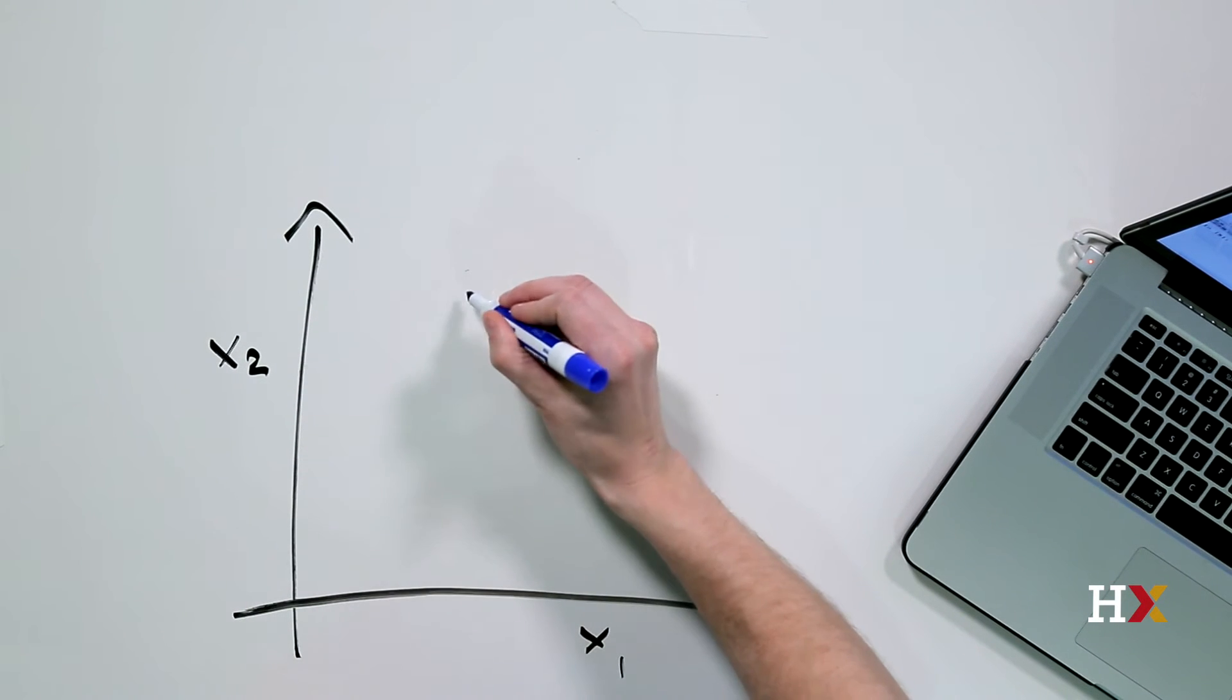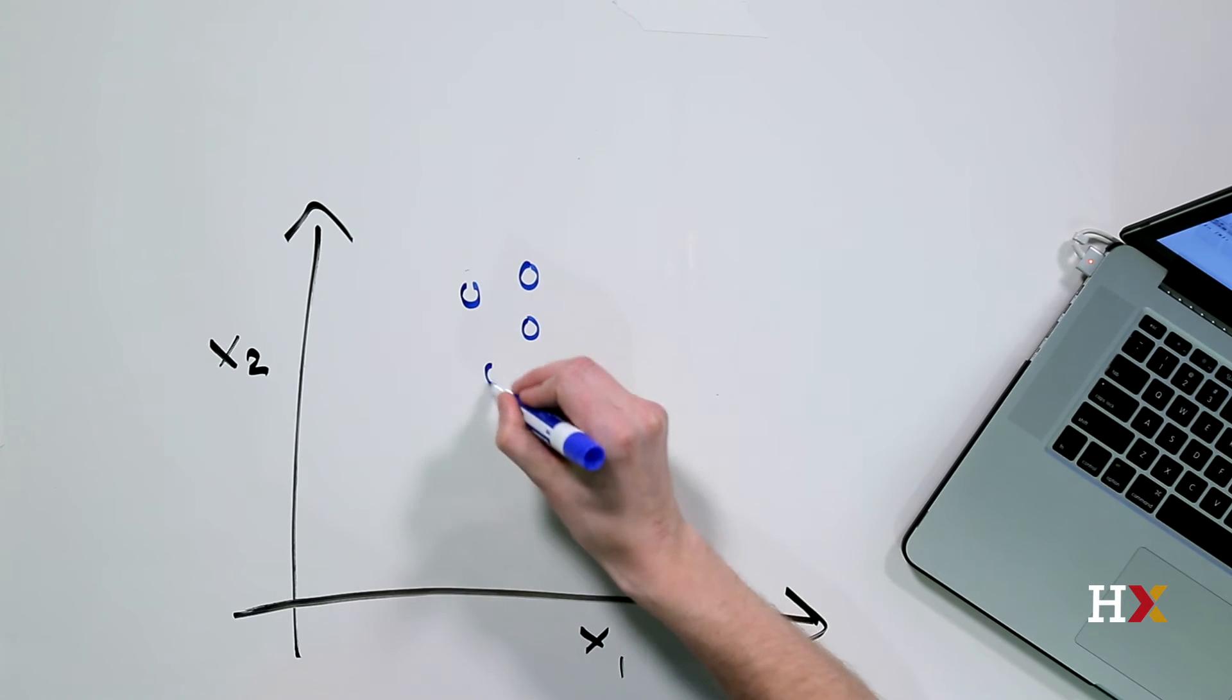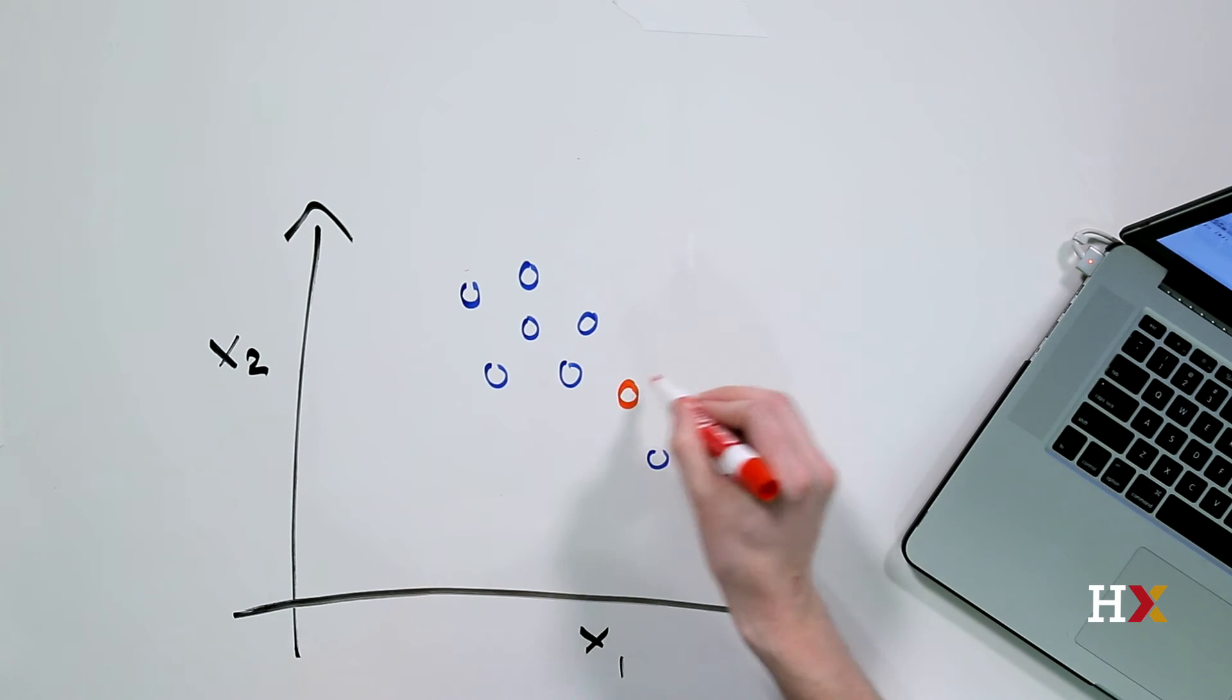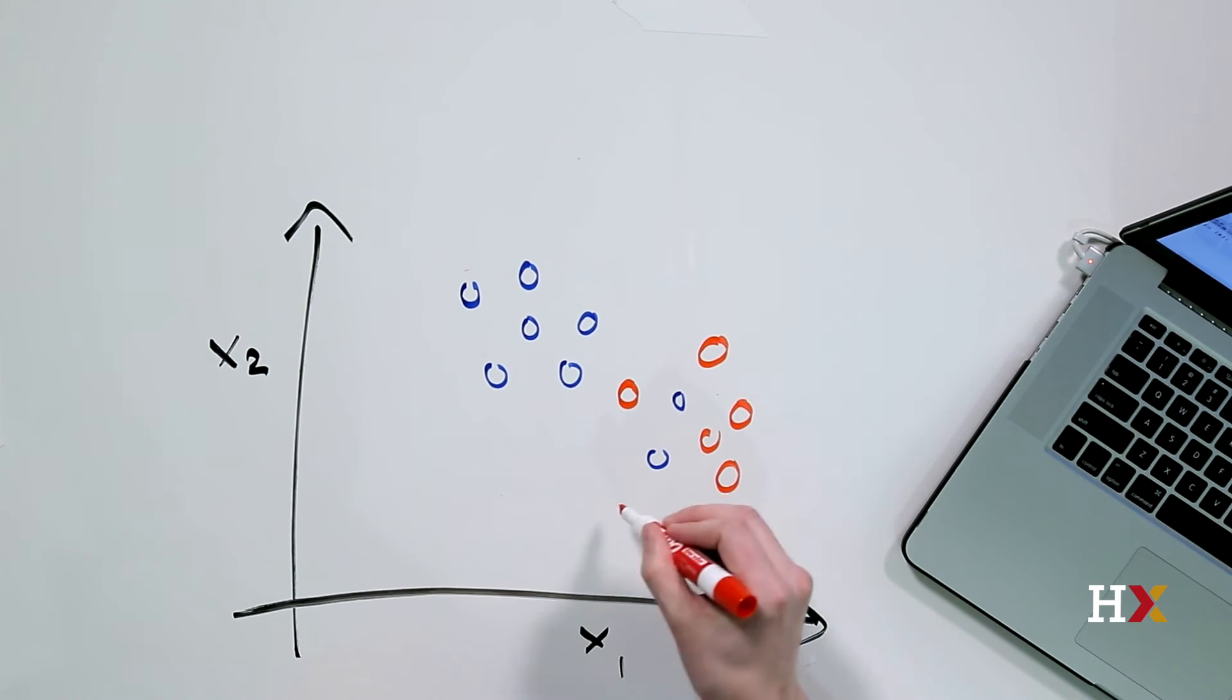We're given a set of points. Some of them are blue, like these points over here, and another set of points that are red, like these points over here. The color of the point tells us the category to which that particular observation belongs.